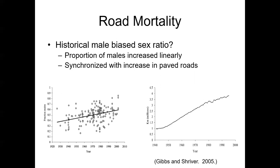Think about this in terms of Chelonian natural history. Consider the age of first reproduction for some of these turtle species — some don't reach sexual maturity until 8, 10, 15, or even 20 years. Think about what that means for populations being able to rebound quickly if they are decimated because of the loss of females. Think about the ramifications of that from a conservation perspective.